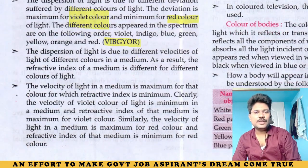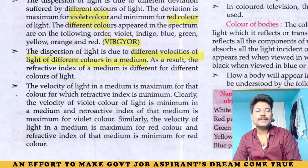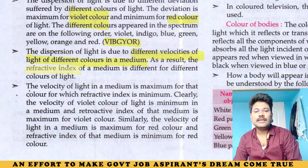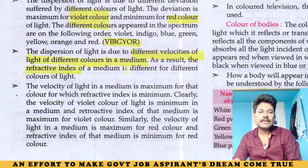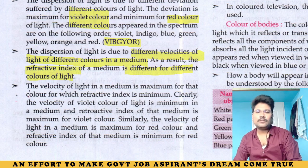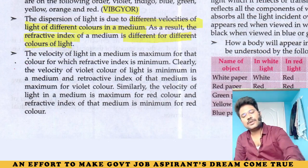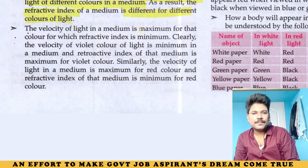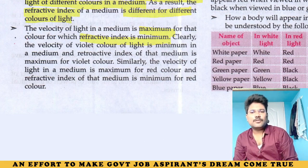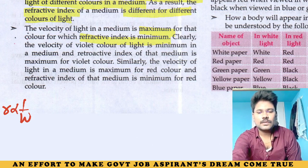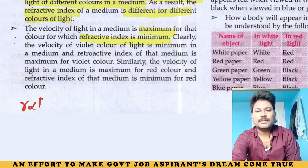The dispersion of light is due to different velocities of light of different colors in a medium. Dispersion of light — velocity difference. As a result of velocity difference, the refractive index of a medium is different for different colors of light. Velocity changes. The velocity of light in a medium is maximum for which refractive index is minimum. R is inversely proportional to W.